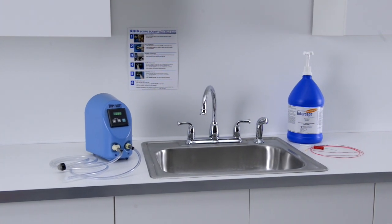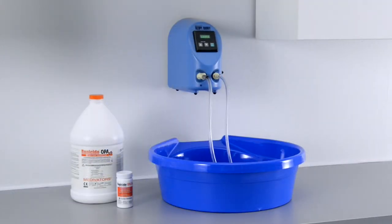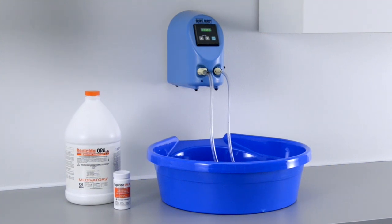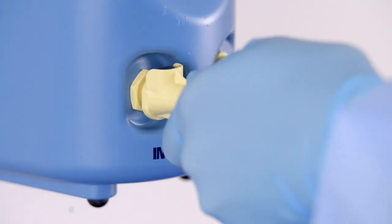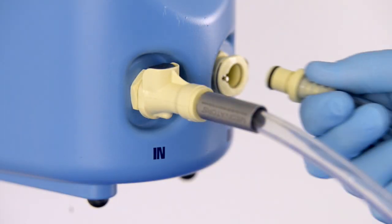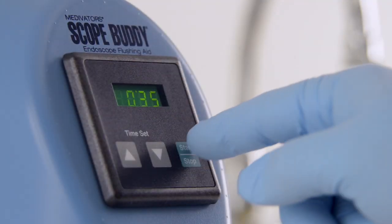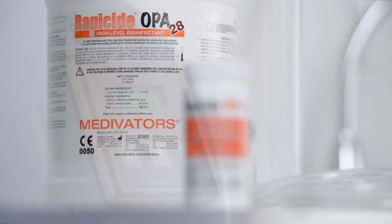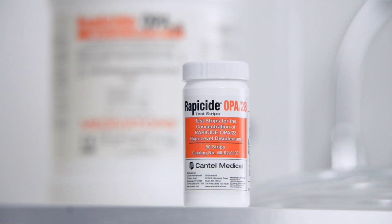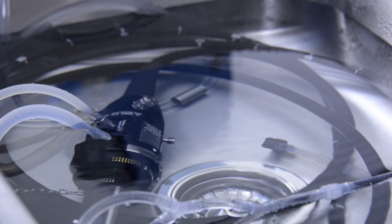ScopeBuddy recirculates fluid through endoscope channels during all steps of reprocessing. By introducing automation into the flushing process, ScopeBuddy eliminates the need for manual syringing during the manual cleaning, high-level disinfection, and rinsing steps of reprocessing flexible endoscopes.